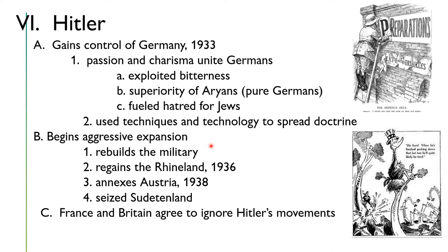Even though the Versailles Treaty said that Germany could not have a military, Hitler began rebuilding the military. He went about it covertly, in a sense — establishing youth camps where he trained children in his militaristic ideas, building up these groups of the young in a military consciousness. Remember that France had sent troops in to take over the Rhineland.